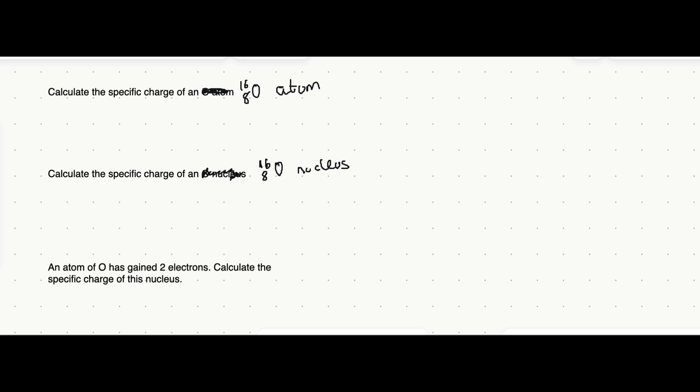Specific charge is misunderstood quite a lot, so I thought I'd make this video to go through the three types of specific charges you're expected to know: the specific charge of an atom in general, the specific charge of a nucleus, and also the specific charge of an ion. In general, specific charge is given by the equation charge over mass, the charge per unit mass.